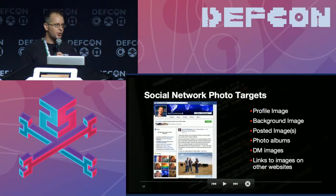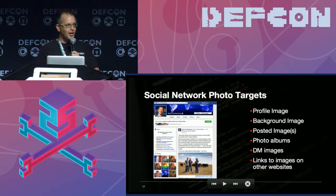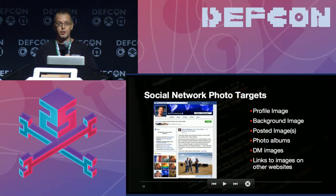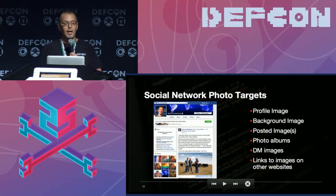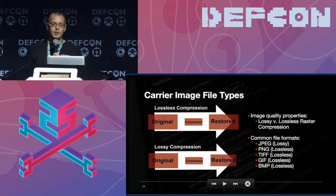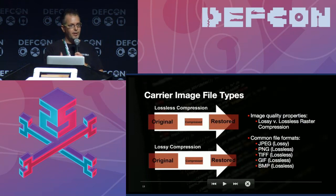So what did we do with our actual research? When you look at social media, there are a variety of images you can target, and that's exactly what we did. We took an ethical approach and asked: to what extent can I hide information in a profile image, a background image, images posted to an album or collection? Can I do that over DM? Or have a link pointing to another site where the image with hidden content resides, rendered within the actual social network post?